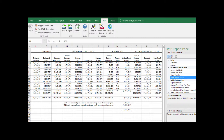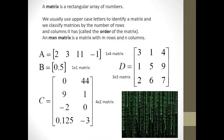A matrix is a rectangular array of data, similar to a spreadsheet, except we're going to assume that all of our data is numeric. We usually use uppercase letters to name or represent a matrix. Matrices are classified by their order, which is the number of rows and columns it contains. An m by n matrix refers to a matrix with m rows and n columns.